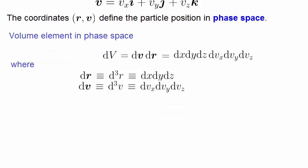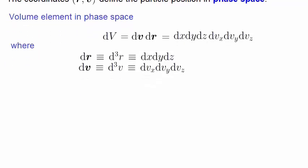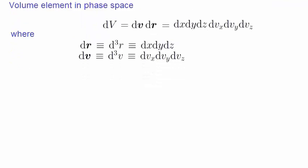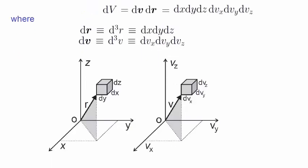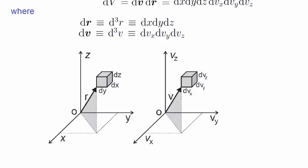But no one can really picture a six-dimensional space. So what we quite often do is we present two three-dimensional spaces side by side, just to make it easier to visualize.